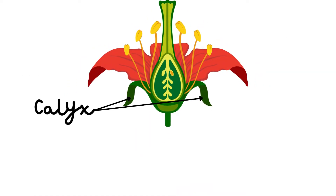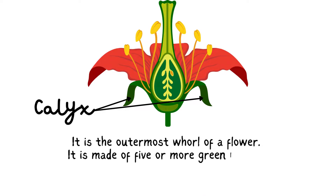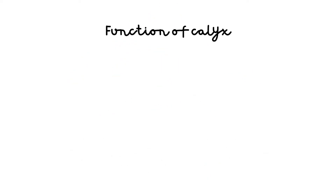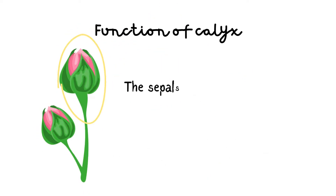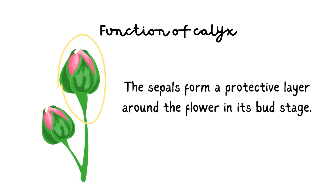Calyx. It is the outermost whorl of a flower. It is made of five or more green leaf-like structures called sepals. Function: the sepals form a protective layer around the flower in its bud stage.